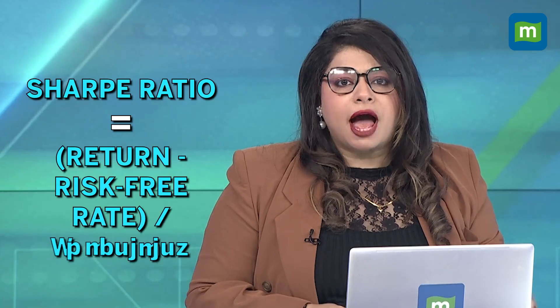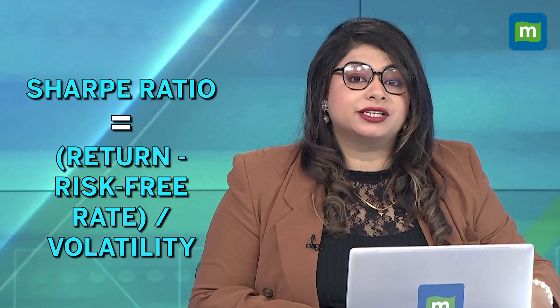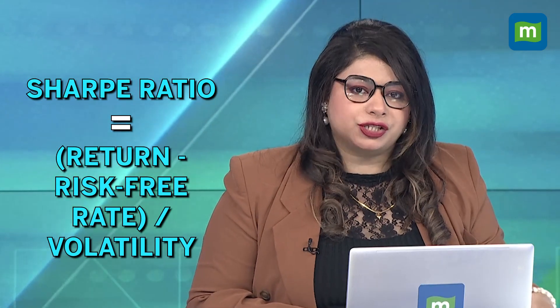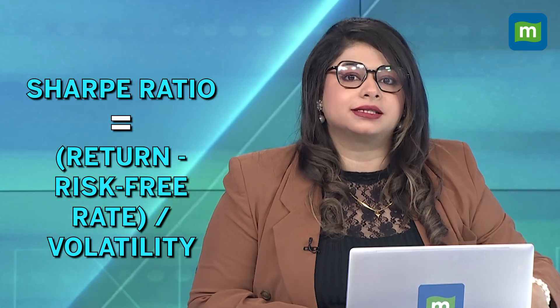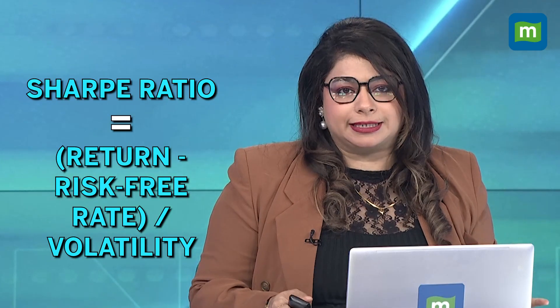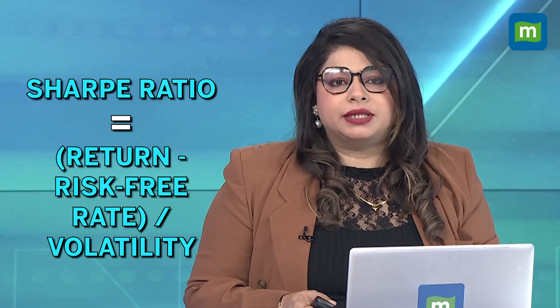Let's talk about the Sharpe ratio. It is the return minus the risk-free rate, divided by the volatility. Let's say you're comparing two investments: one gives you eight percent returns with higher volatility, and the other gives you six percent with lower volatility. Which one is better? You might get puzzled by that.